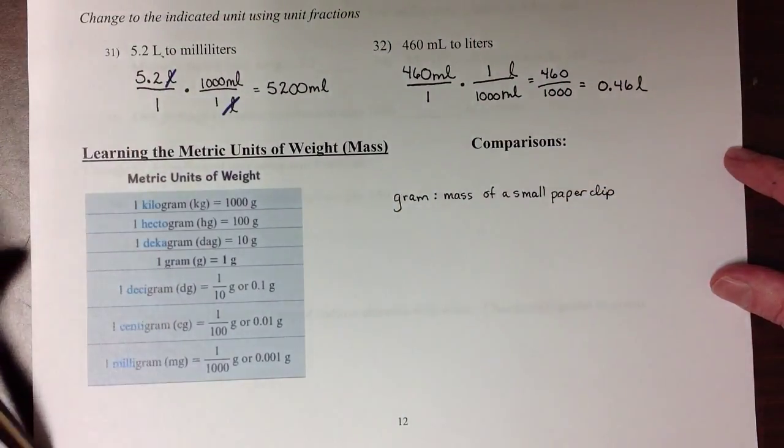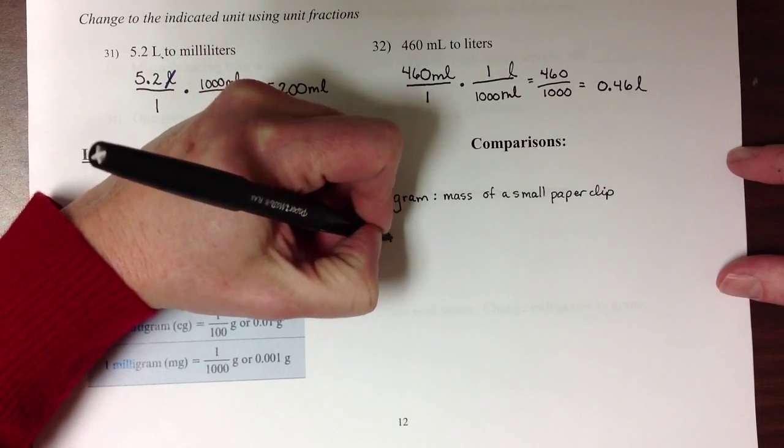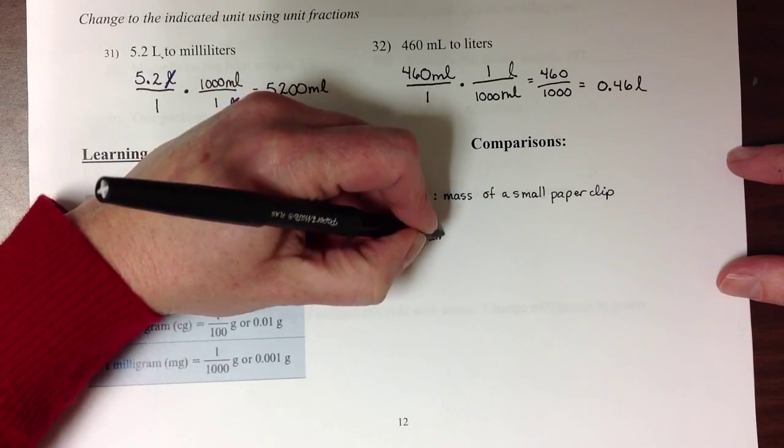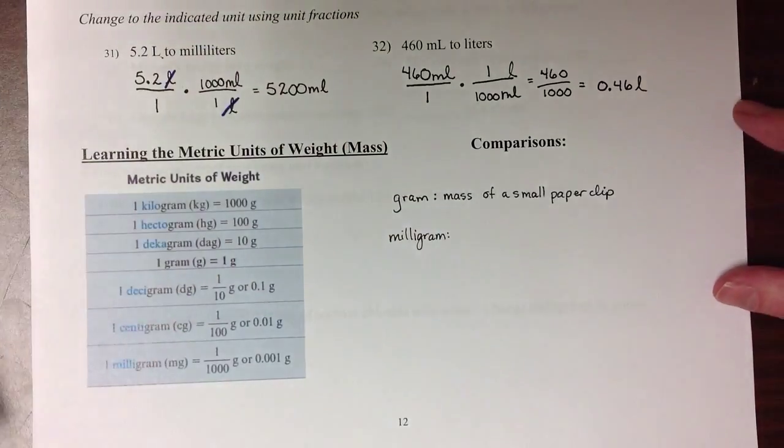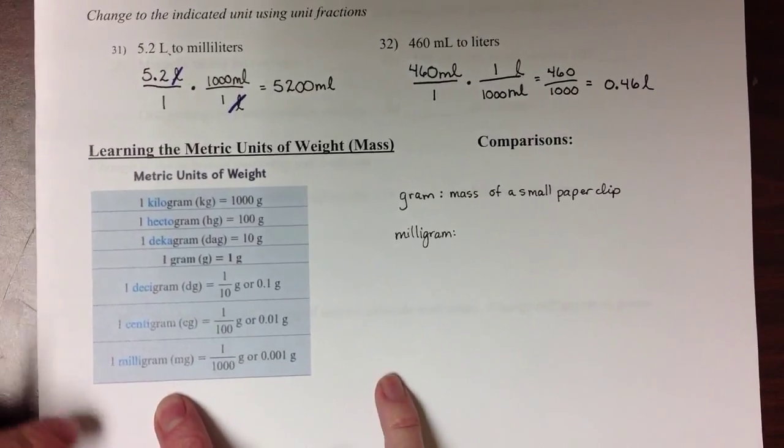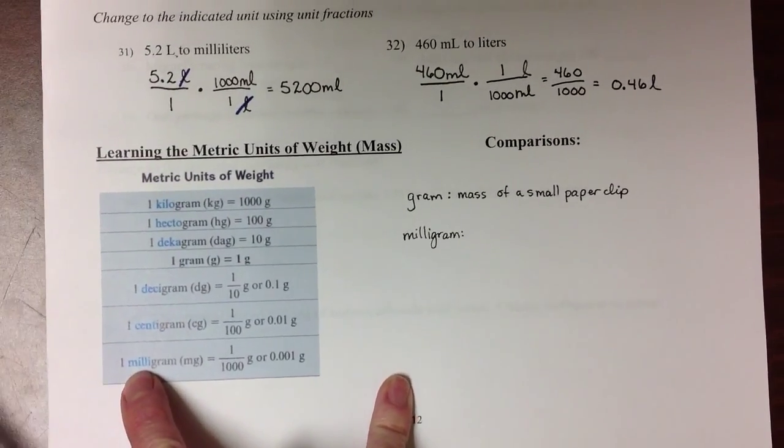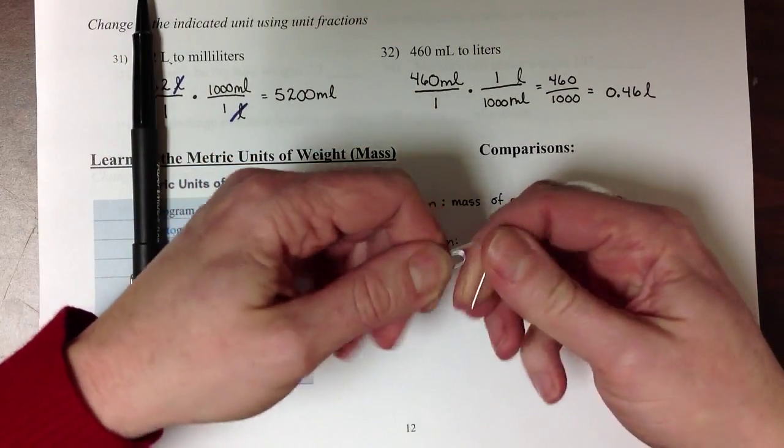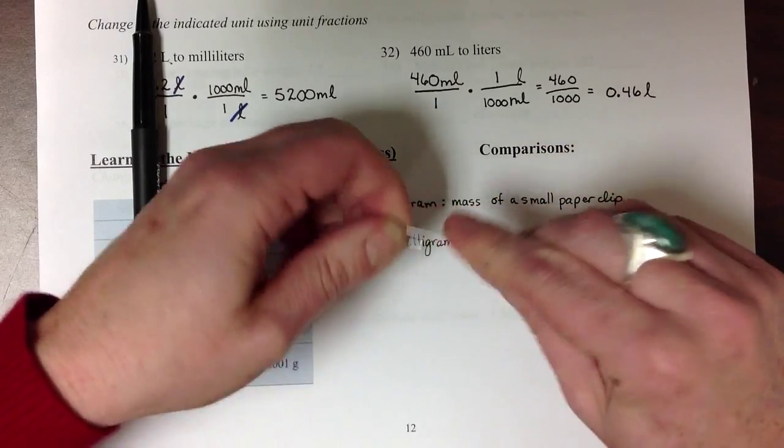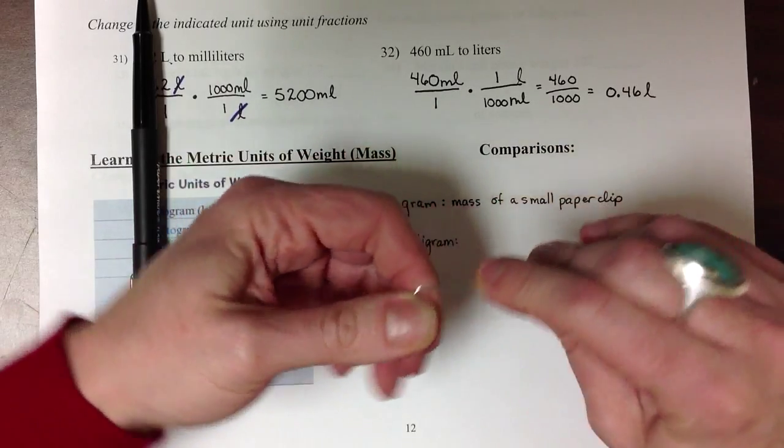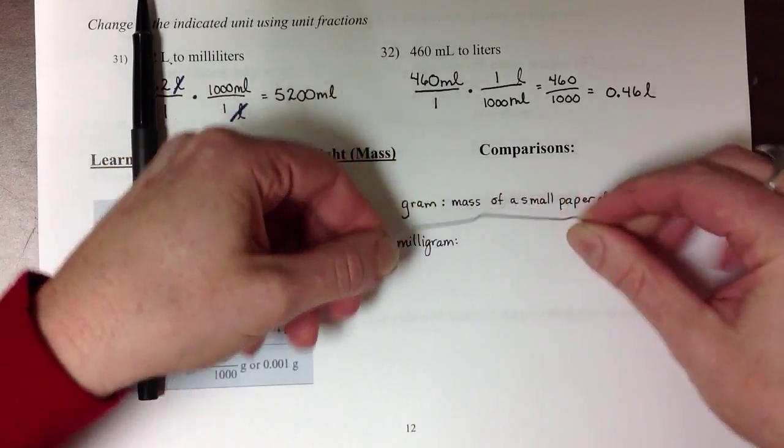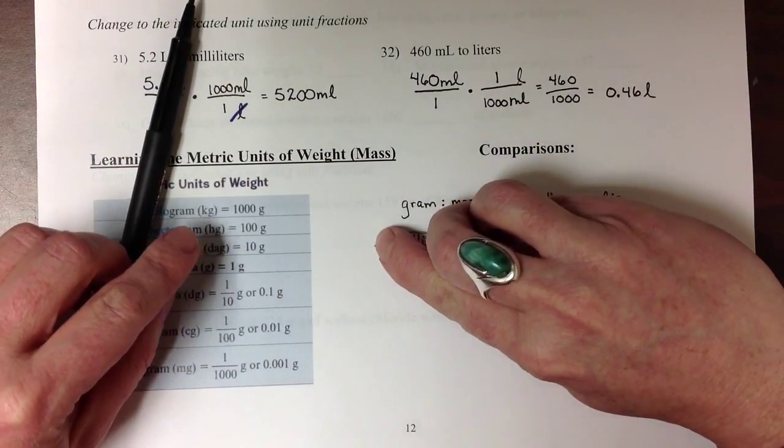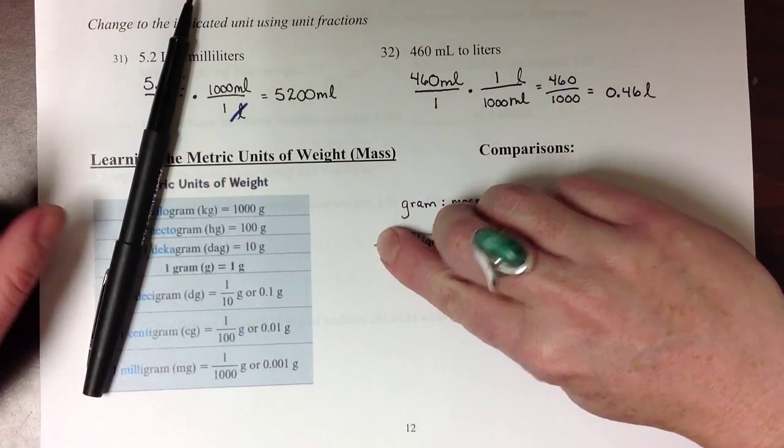The other two weights that we're going to see often are the milligram, which is a very, very tiny unit of measure. Because remember, milli means one one-thousandth of a gram. So if you could take this paper clip and actually cut it up into a thousand equal pieces, one one-thousandth of that paper clip, that teeny tiny little speck on the end, is about a milligram.